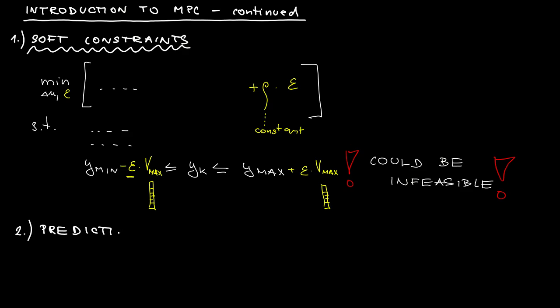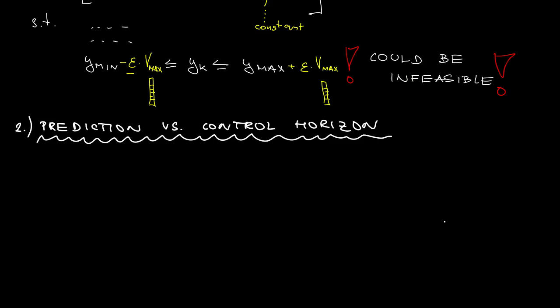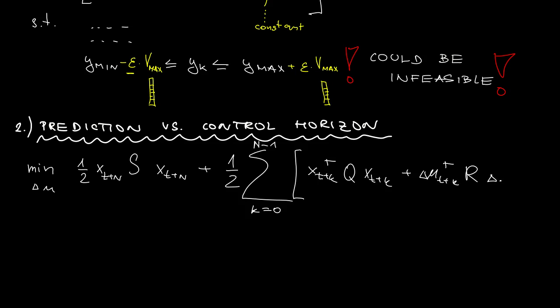Another extension that I would like to offer you is called control horizon as compared with the prediction horizon that we've already explained. Let me recall that typically our optimization criterion looks like this, the standard quadratic cost.